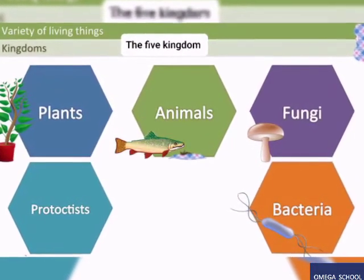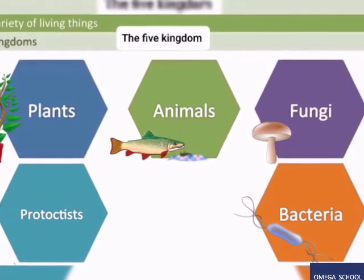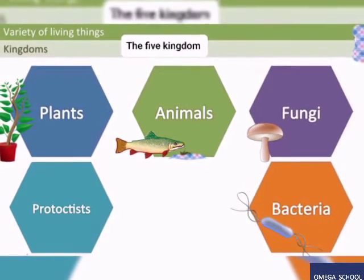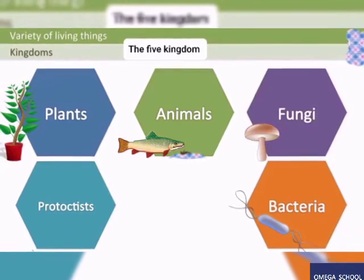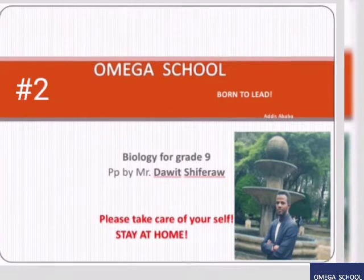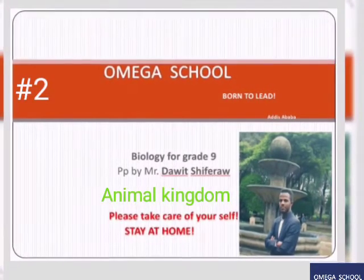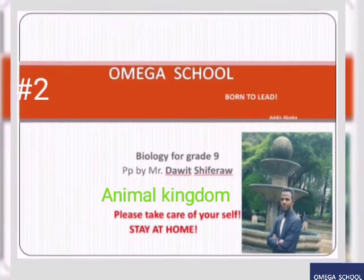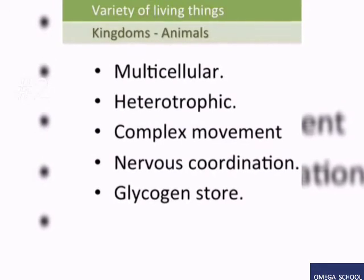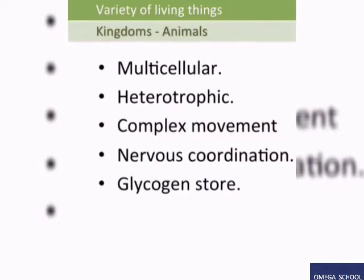Today our main topic is Kingdom Animalia. Kingdom Animalia includes animals. The main characteristics of animals are that they are multicellular, eukaryotic, and heterotrophic organisms. Multicellular means made of many cells; eukaryotic means they have a true nucleus; and heterotrophic means they depend on others to survive. They also have complex movement and nerve coordination which allows them to sense their environment.